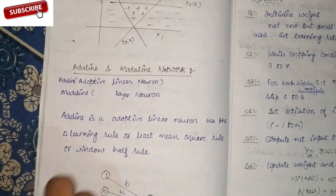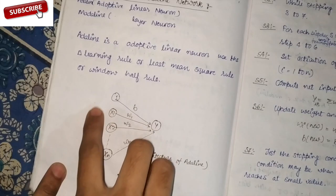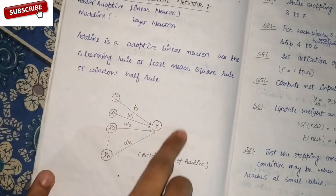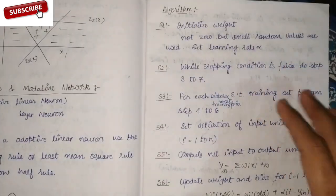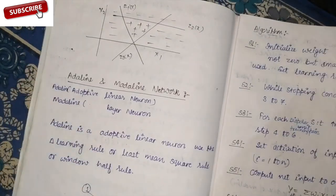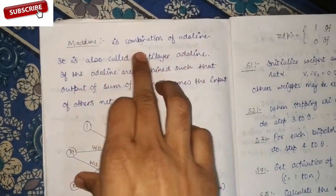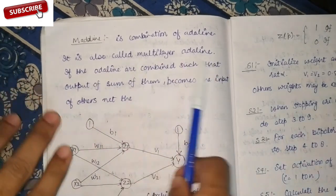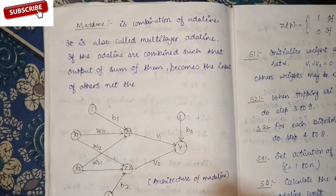So Adaline made a combination of Madaline. Adaline is also called multi-layer Adaline. This is a combination — multiple layers working together.